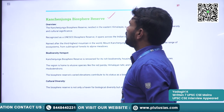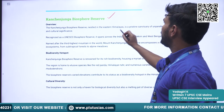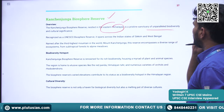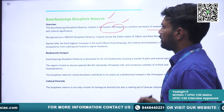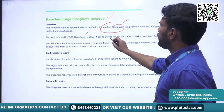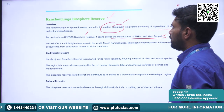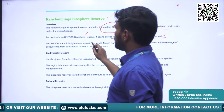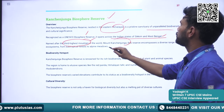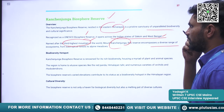The next one is Kanchenjunga Biosphere Reserve. It is nestled in the Eastern Himalayas, a pristine sanctuary of unparalleled biodiversity. It is recognized as a UNESCO Biosphere Reserve and spans across two Indian states — Sikkim and West Bengal. It is named after the third highest mountain in the world, Mount Kanchenjunga, and encompasses a diverse range of ecosystems.